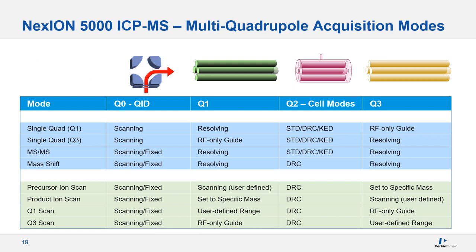With the Nexion 5000's multiple quadrupole acquisition modes, not only can you operate in single quadrupole mode, but you can also run it in MS-MS mode and mass shift mode. There is also the ability to do ion scans — both precursor and product ion scans — before and after the reaction cell to see what is being formed, which is useful when developing methods.